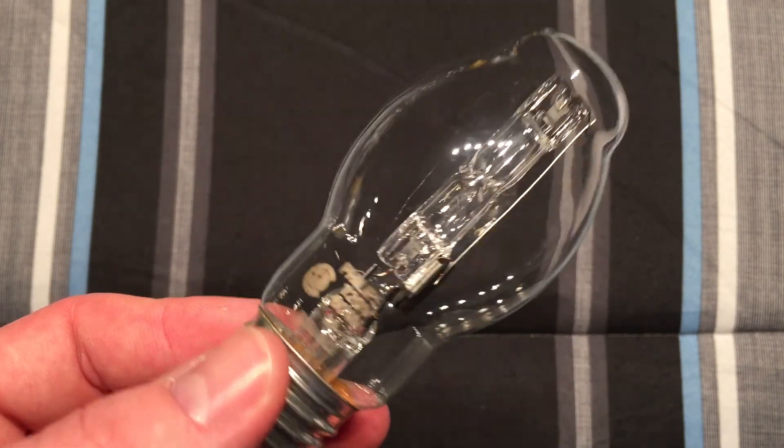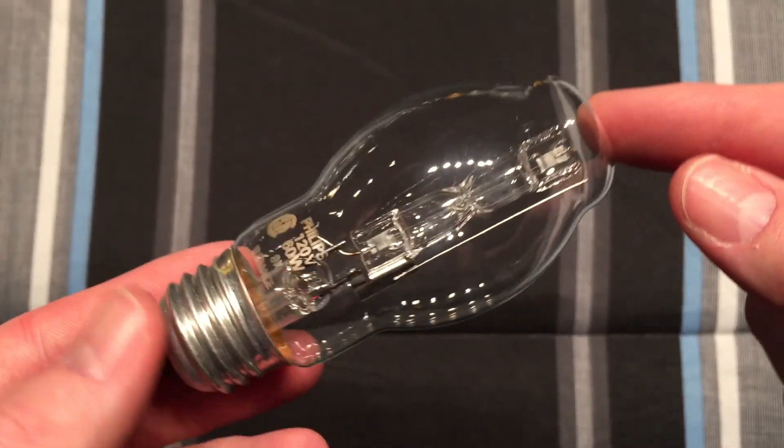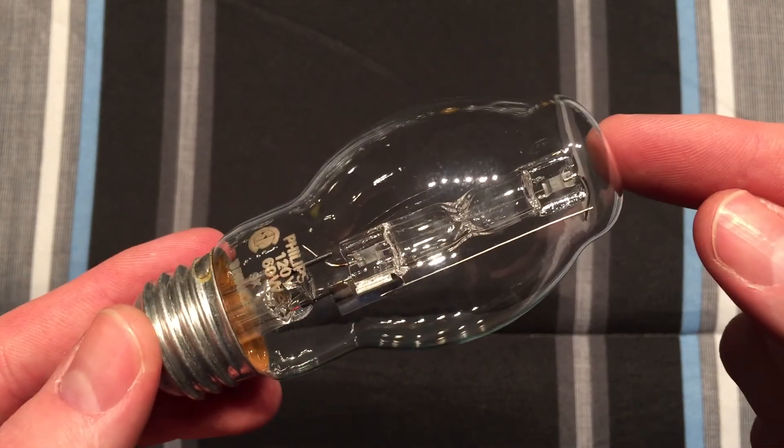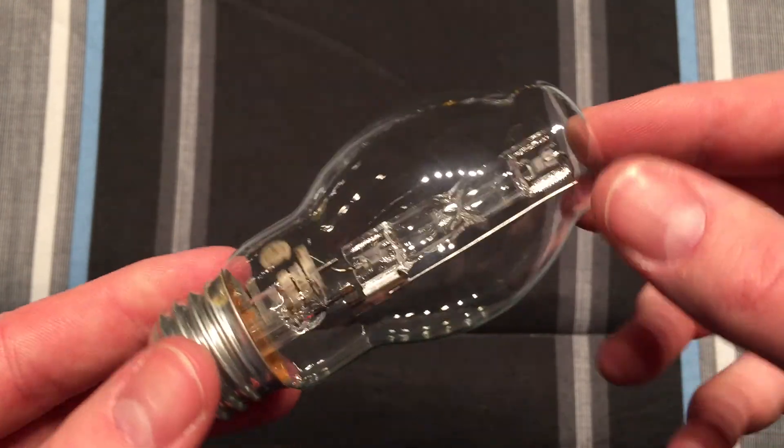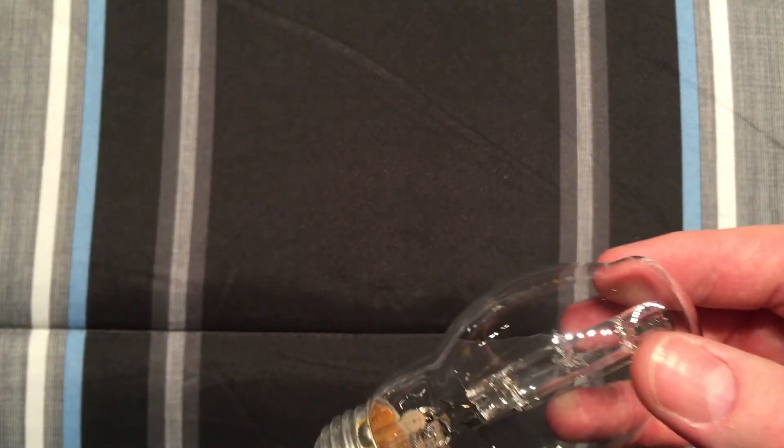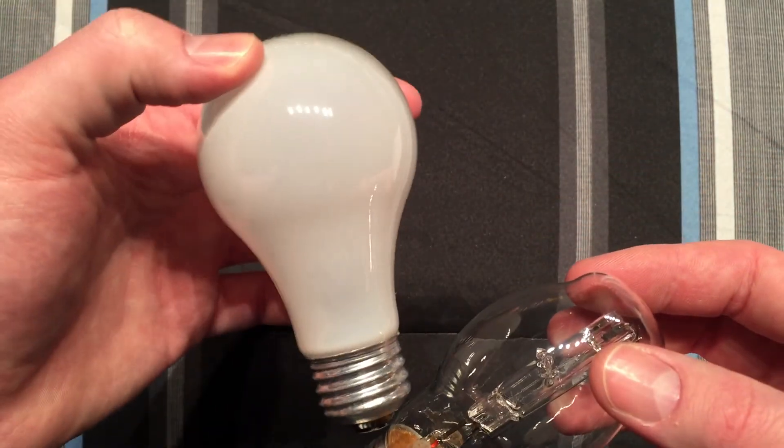Hello everybody, today I'm going to show you this Philips 60-watt halogen bulb. This is one of the first generation of halogen bulbs on the market, before they started putting them in regular-shaped bulbs like these.